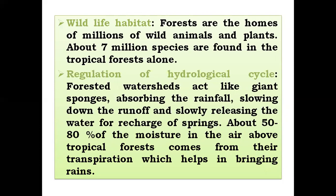Regulation of the hydrological cycle is another ecological use of forests. Forests act like giant sponges, absorbing rainfall, slowing down runoff, and slowly releasing water for recharge of springs. About 50 to 80 percent of the moisture in the air above tropical forests comes from their foliage, which helps in bringing rains.